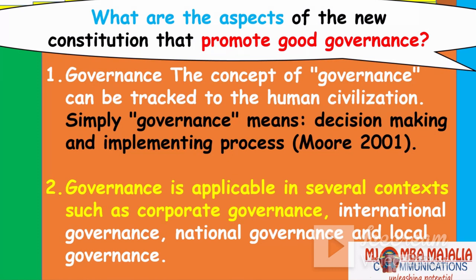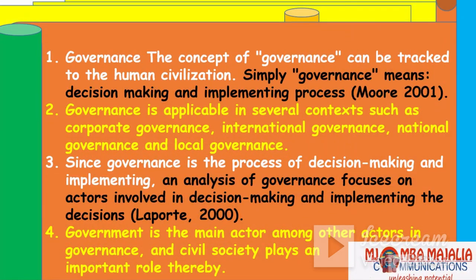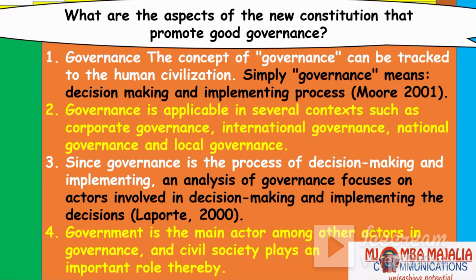Governance is applicable in several contexts such as corporate governance, international governance, national governance, and local governance. Since governance is the process of decision-making and implementing, an analysis of governance focuses on the actors involved. In our case there are quite a few: politicians, civil society, and the people. Government is the main actor among others. The judiciary is important, parliament is important — that's why we have the three arms of government.